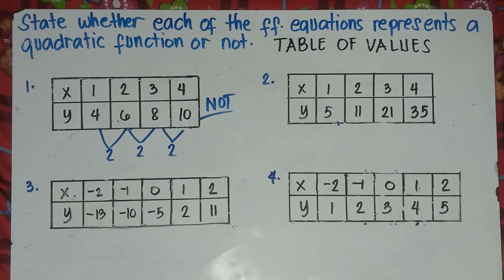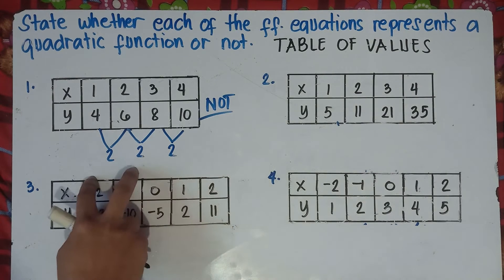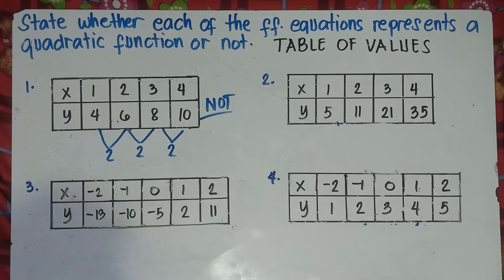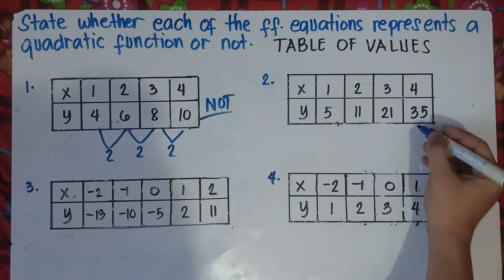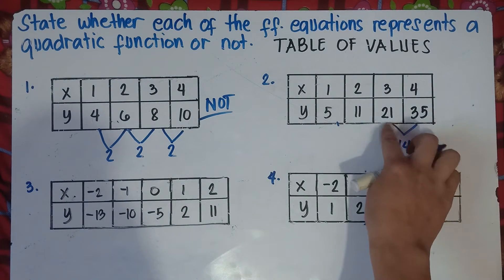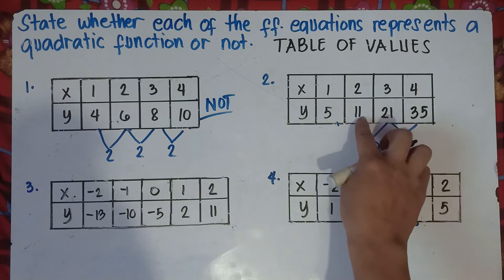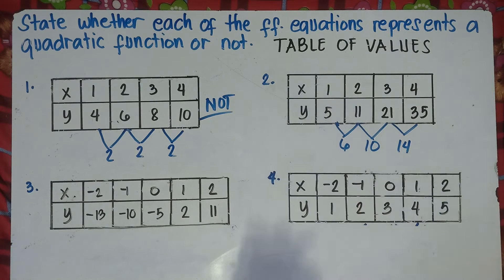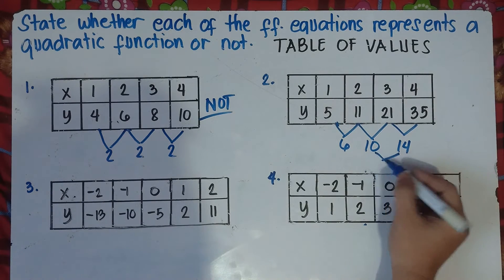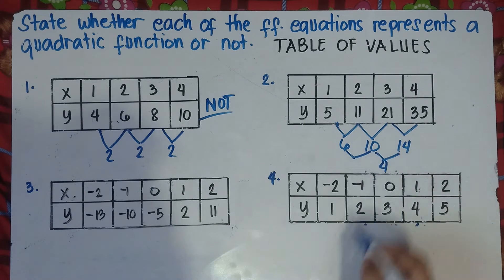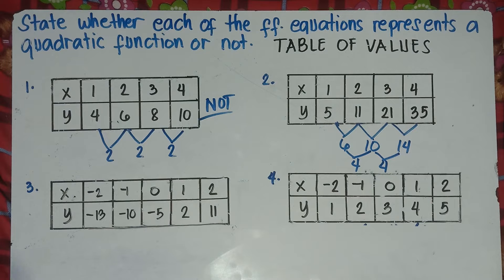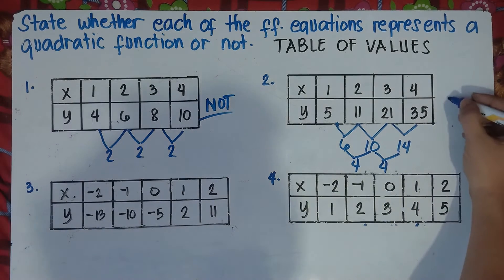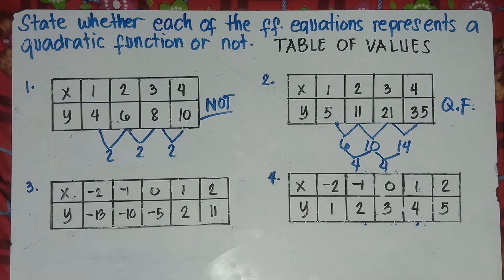Let's try number 2 to check if it's a quadratic function or not. Subtracting right to left: 35 minus 21 is 14, 21 minus 11 is 10, 11 minus 5 is 6. The first differences are not all the same, so we need to get the second difference. 14 minus 10 is 4, and 10 minus 6 is 4. They have the same second difference of 4, so this function is a quadratic function.